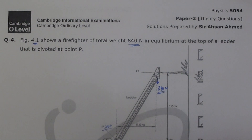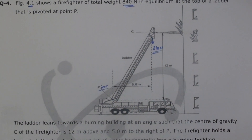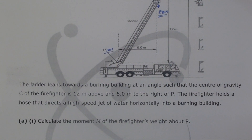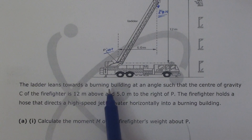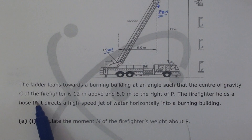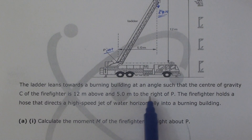This is a question where there is a little technicality involved and you have to read it very carefully. The ladder leans towards a building at an angle such that the center of gravity C of the firefighter is 12 meters above and 5 meters to the right of P.